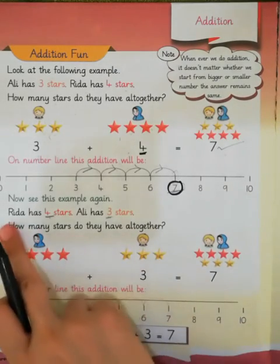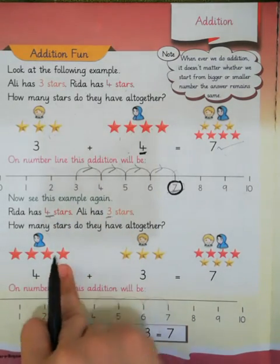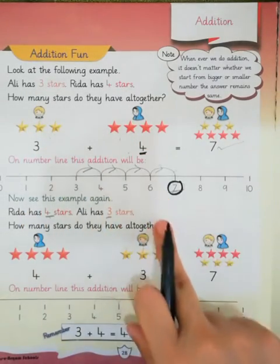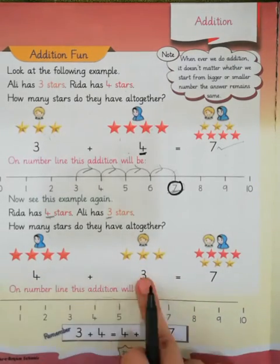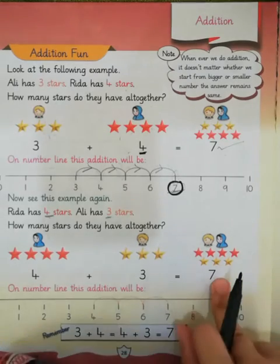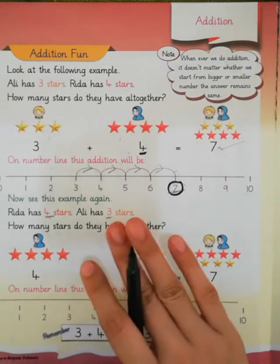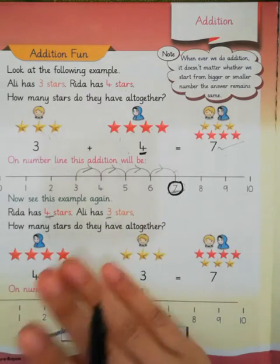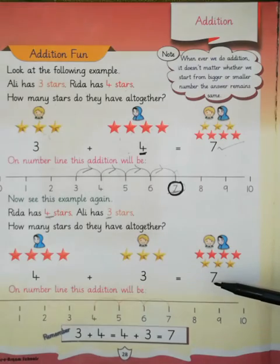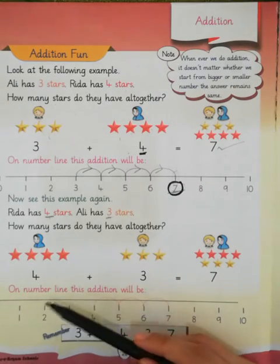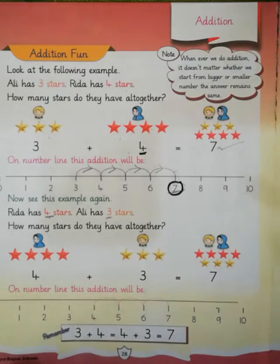Here we have another example. Rida has four stars and Ali has three stars. Before, Ali had three and Rida had four — now it is opposite. Now Rida has four and Ali has three. We have to add these up. The answer will remain the same — here the answer is also seven. Same as before, you have to show the diagrams and show the answer on the number line.